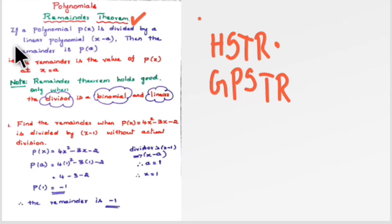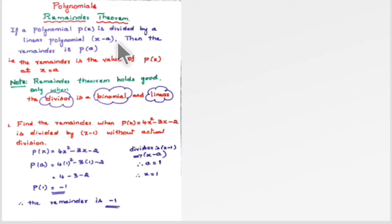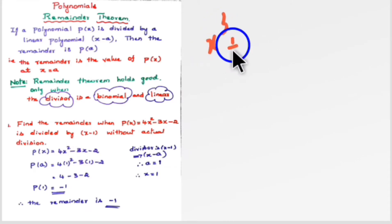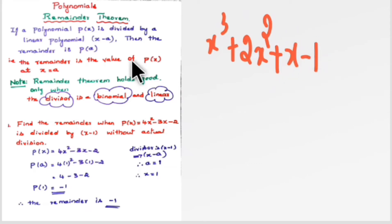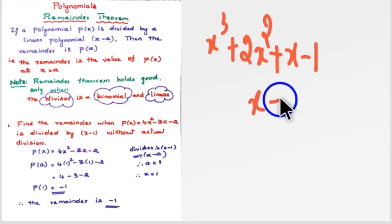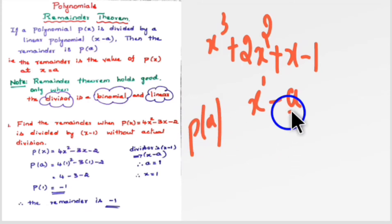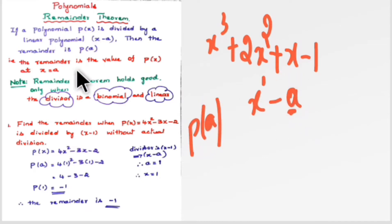What does the Remainder Theorem say? If a polynomial p(x) is divided by a linear polynomial (x minus a), then the remainder is p(a). For example, take x³ + 2x² + x - 1. If this is divided by a linear polynomial — linear means no square, the degree is 1 — then the remainder will be p(a), where 'a' is the constant in that factor.